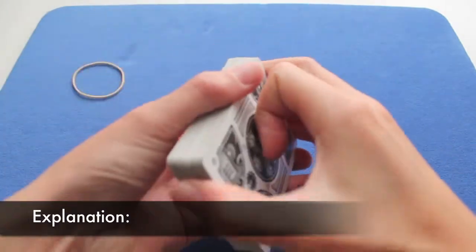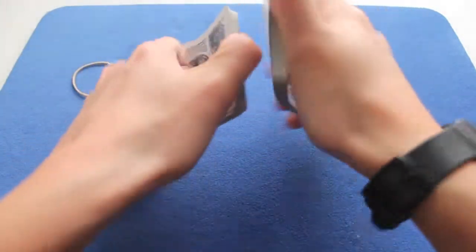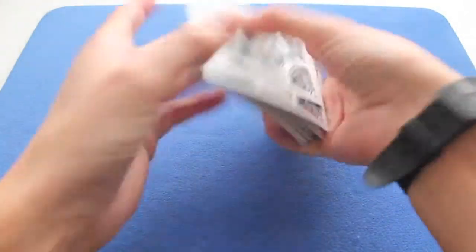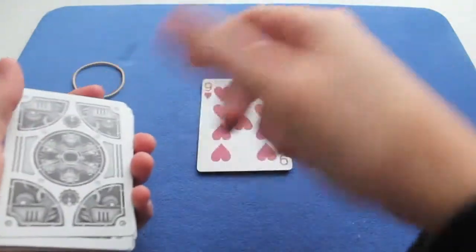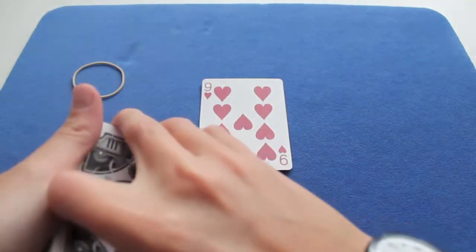You turn it over. So, how does it work? It's very simple. First, the spectators shuffle the cards as much as they want. They pick one, let's say this one for example. The nine of hearts.